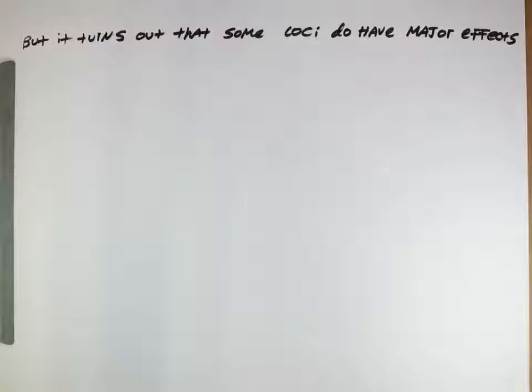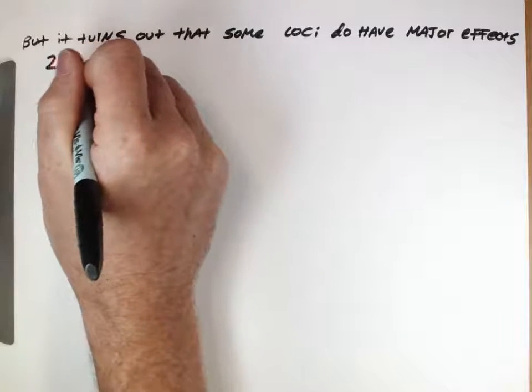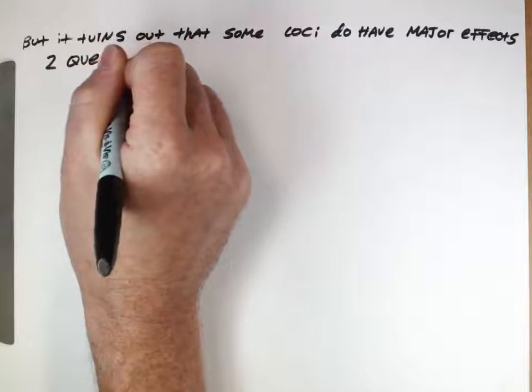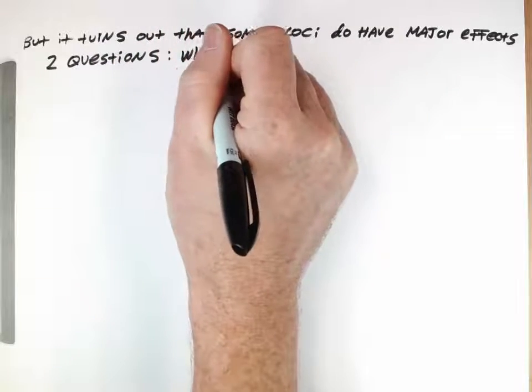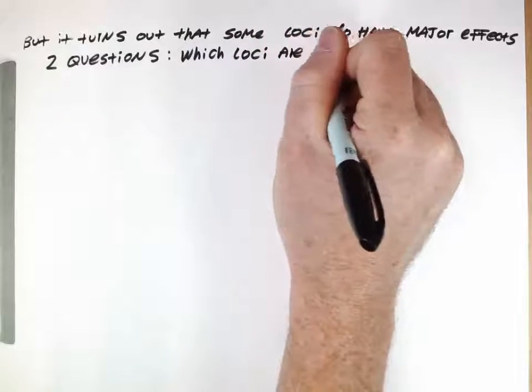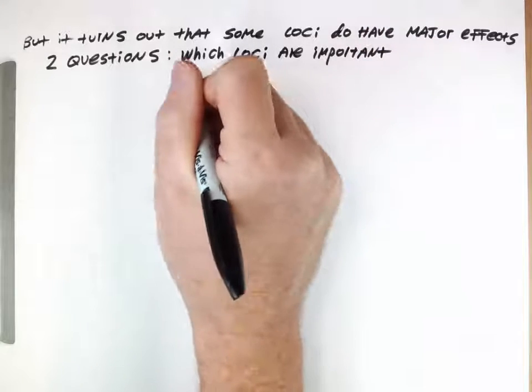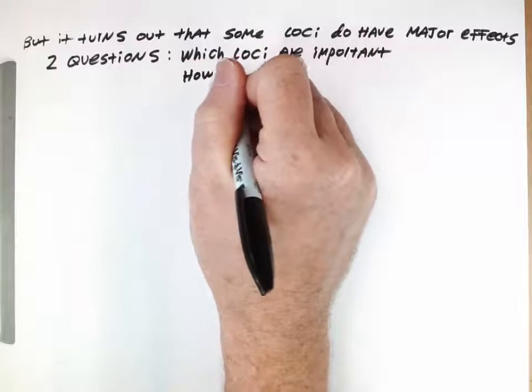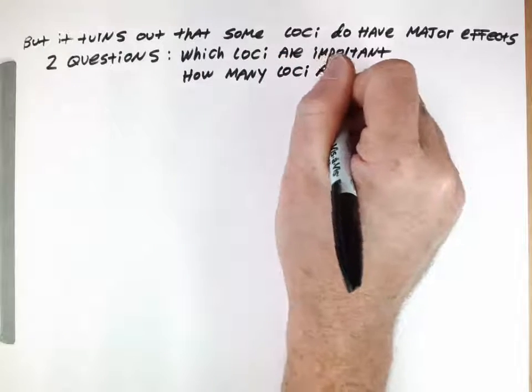Some loci actually have really large effects even for quantitative traits. And so for thinking about that, this can lead to two questions. First being, which loci are important? And then a second question would be, how many loci are important?